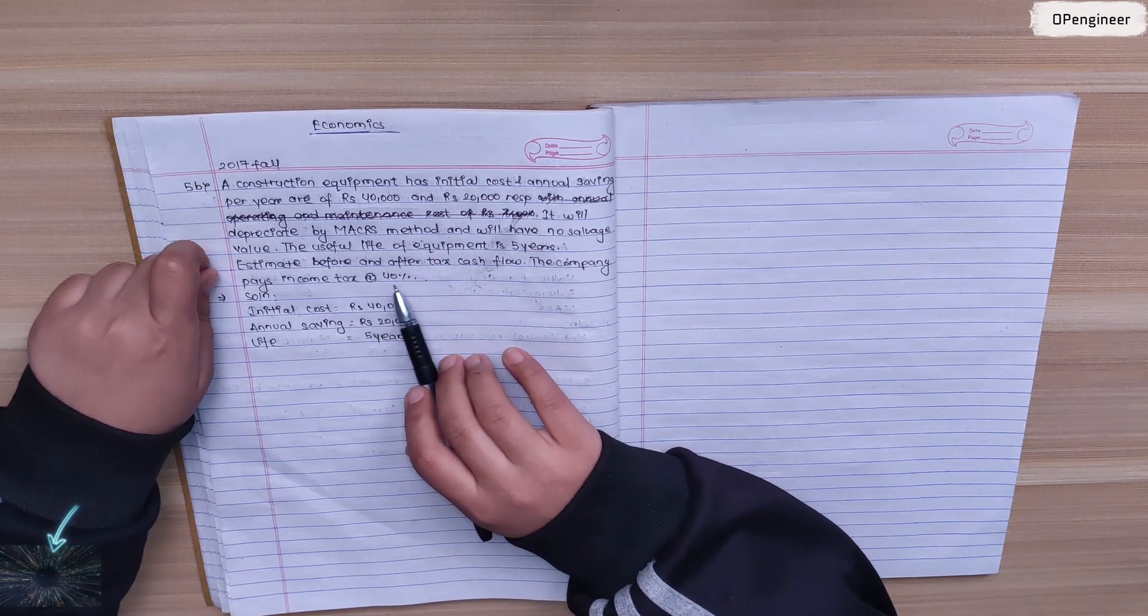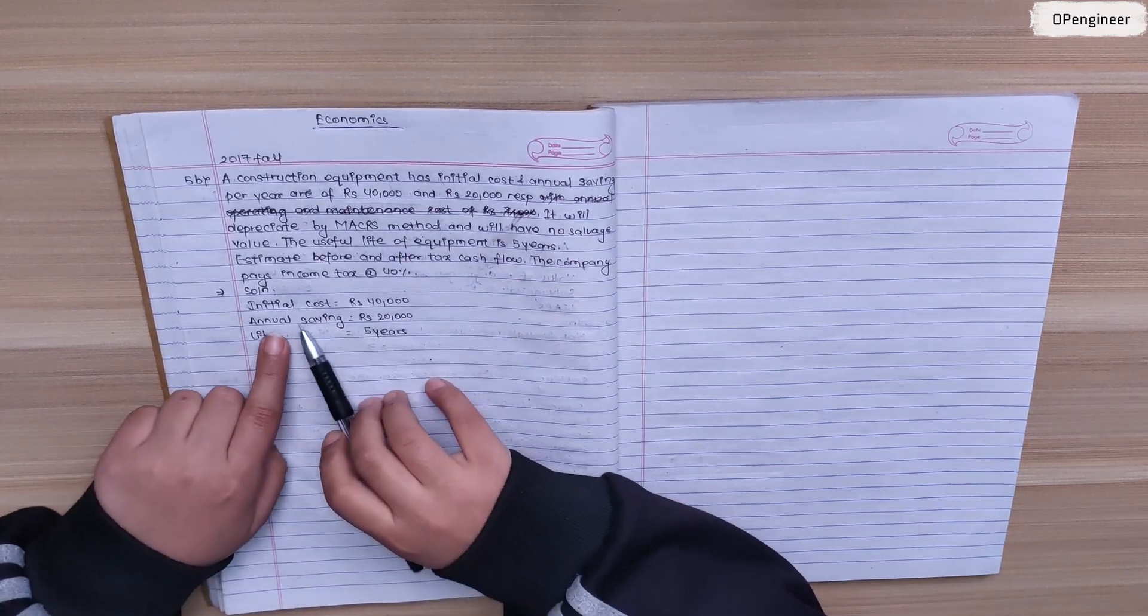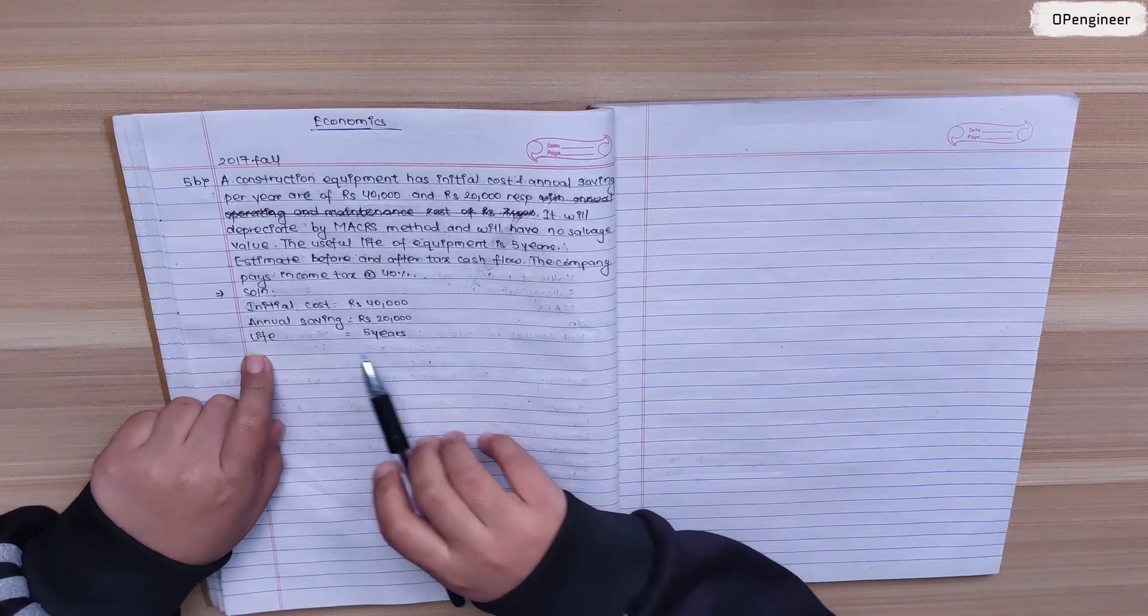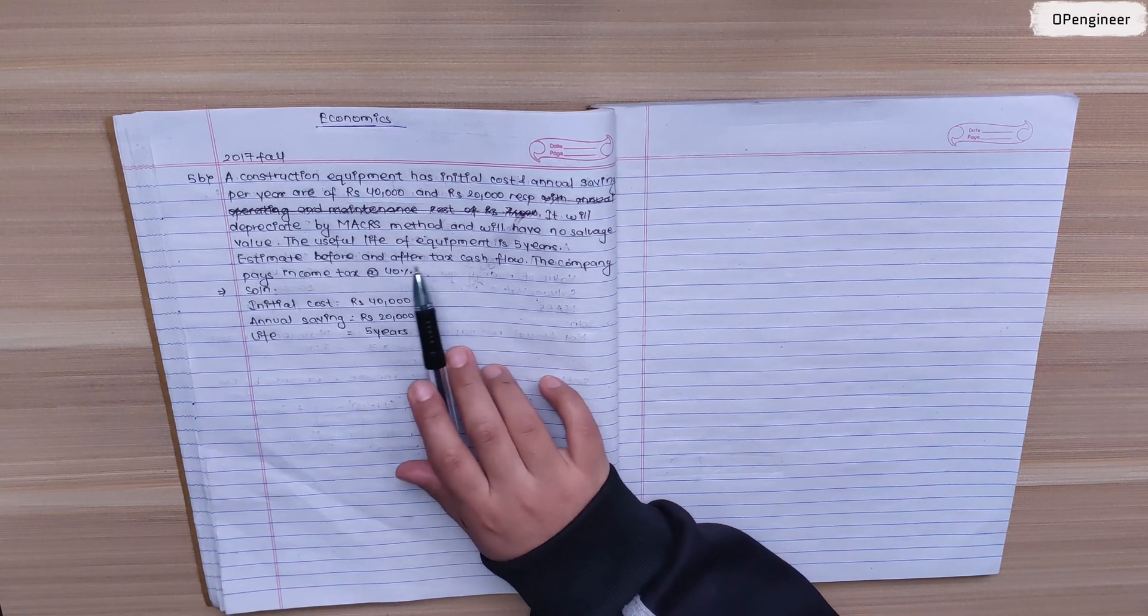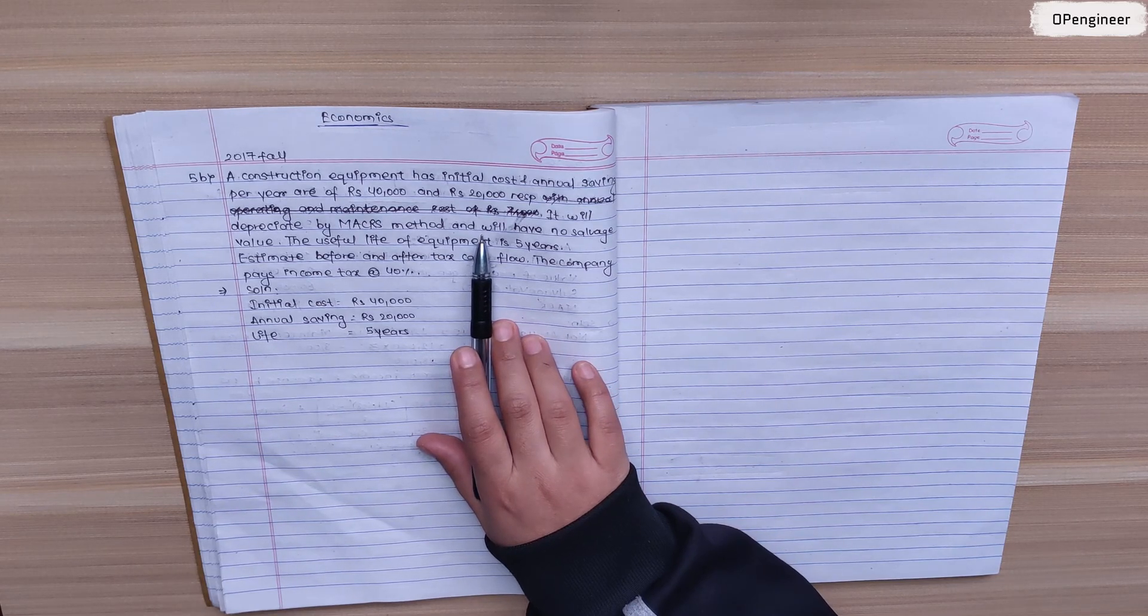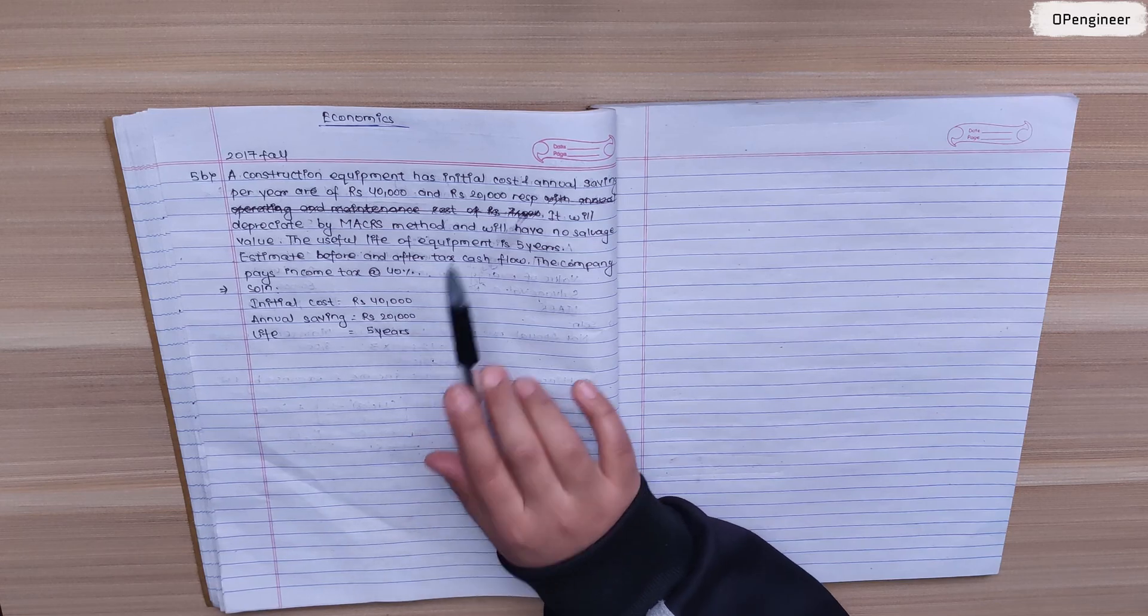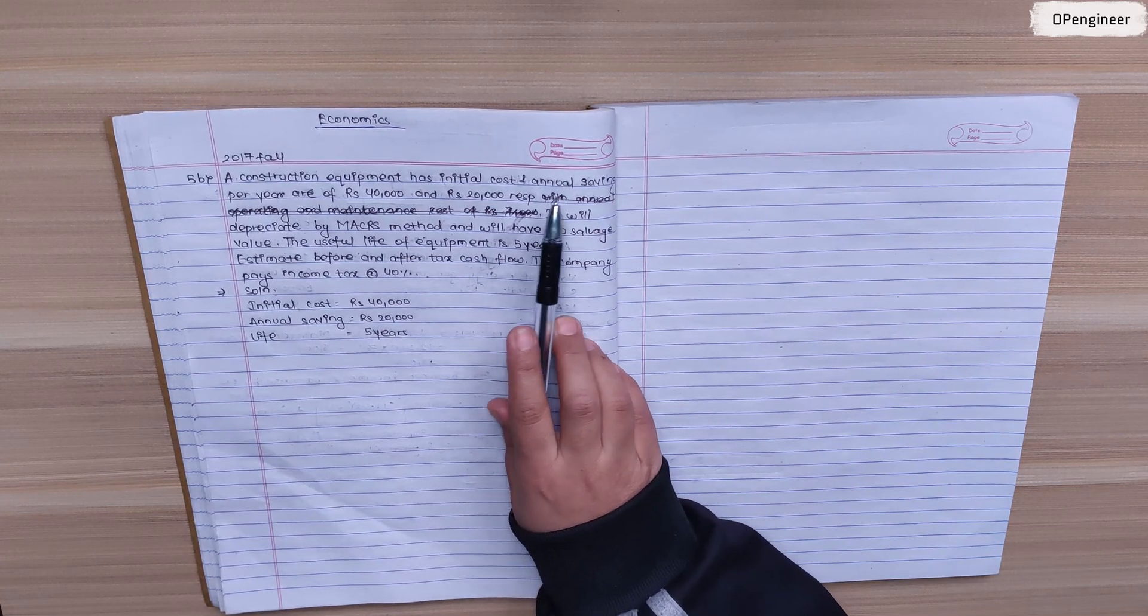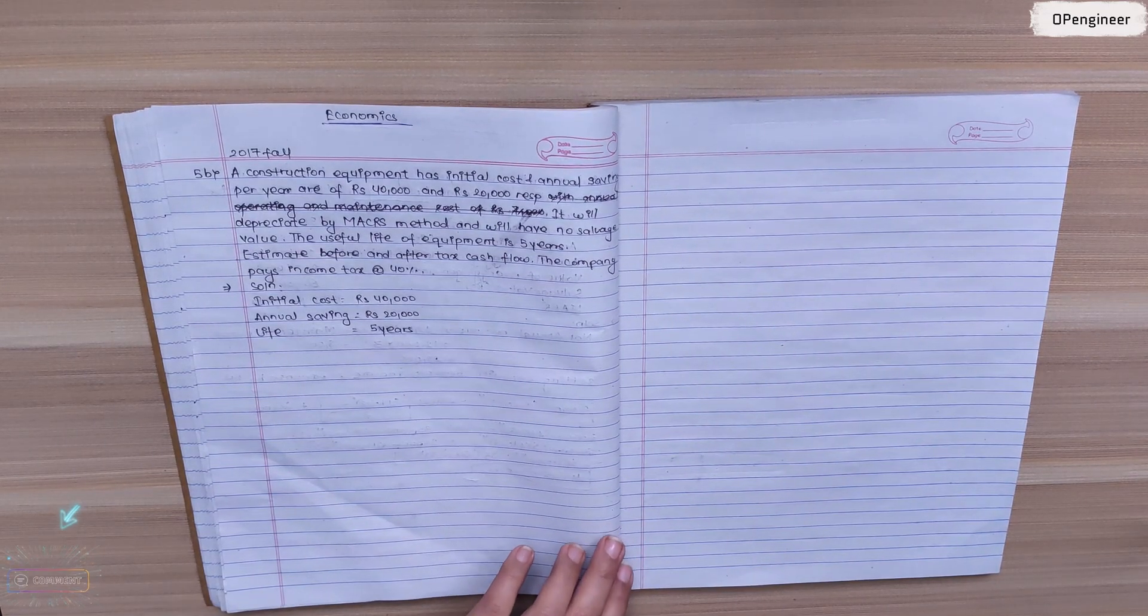The company pays income tax of 40%. Initial cost is 40,000, annual saving is 20,000, and life is five years. In this question, there is no annual operation and maintenance cost given. So we have annual savings only, not annual savings minus operation and maintenance cost.